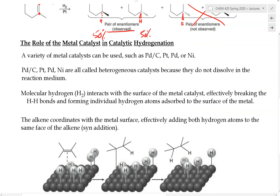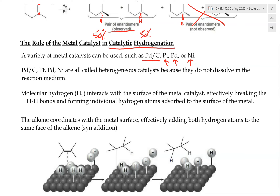Let's talk about the role of the metal catalyst in this hydrogenation reaction — also called catalytic hydrogenation. A variety of metals have been used: for example, palladium on carbon, platinum, palladium, or nickel. These metals are referred to as a heterogeneous catalyst because they do not dissolve in the reaction medium — when we add our organic substance and the metal catalyst, they do not dissolve in each other.